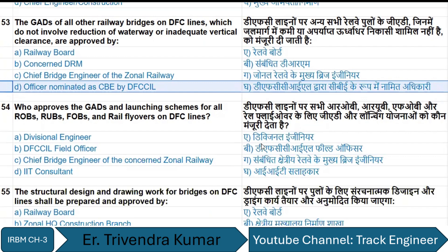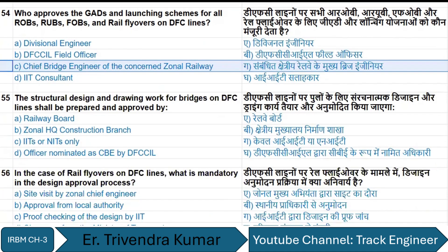GAD and launching schemes for all ROBs, RUBs, FOBs, and rail flyovers on the DFC line are approved by the Chief Bridge Engineer of the concerned zonal railway. Structural design and drawing work for bridges on the DFC line shall be prepared and approved by the officer nominated by the CBE.